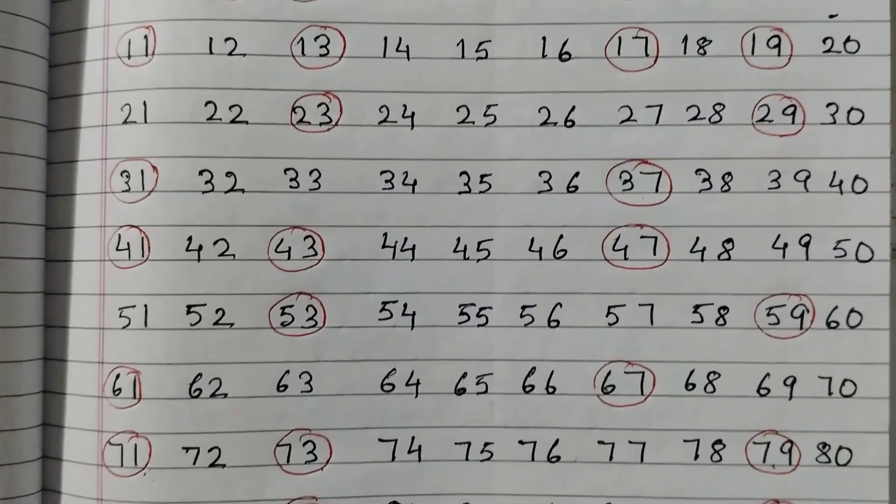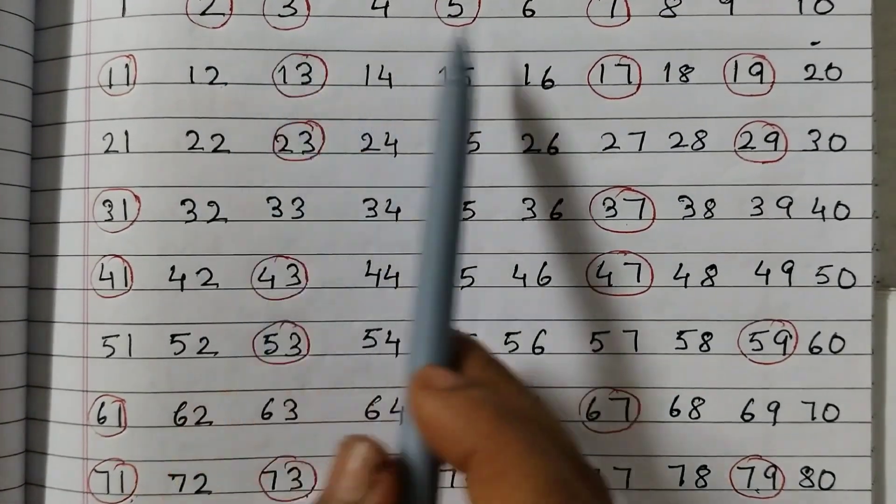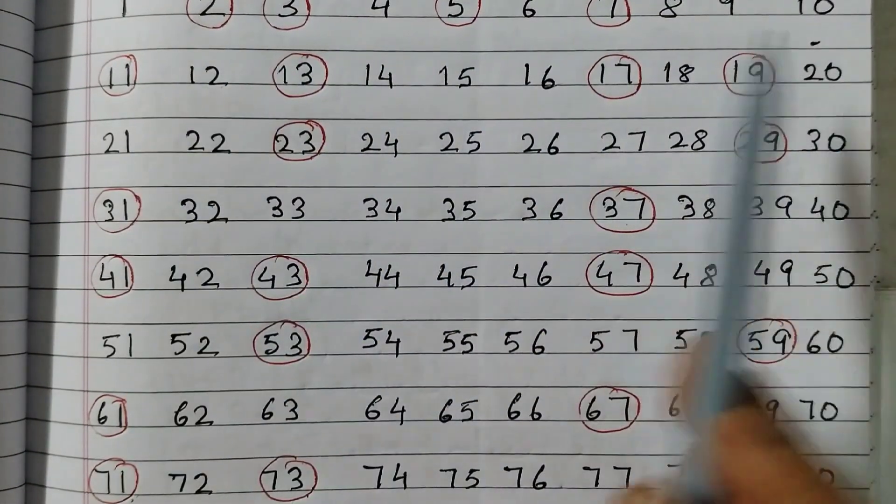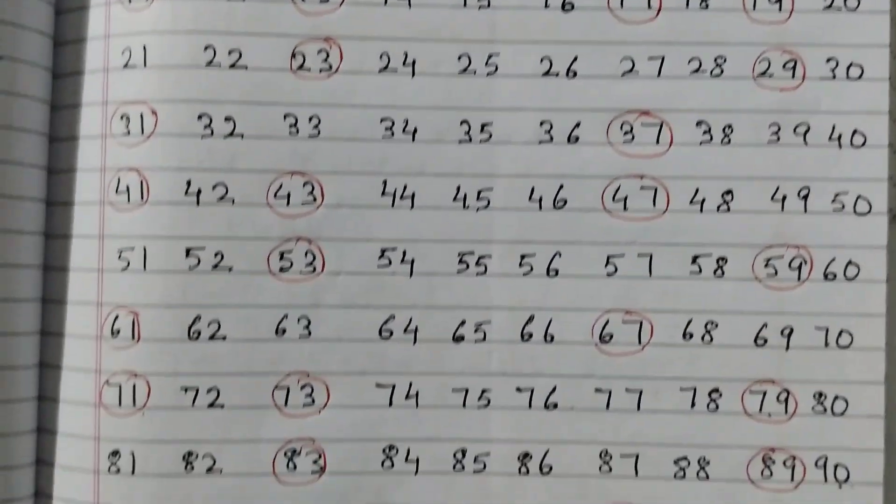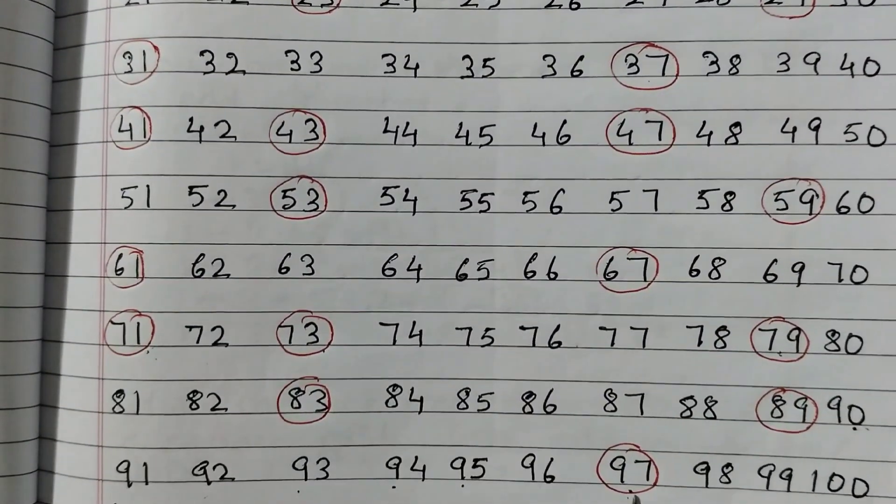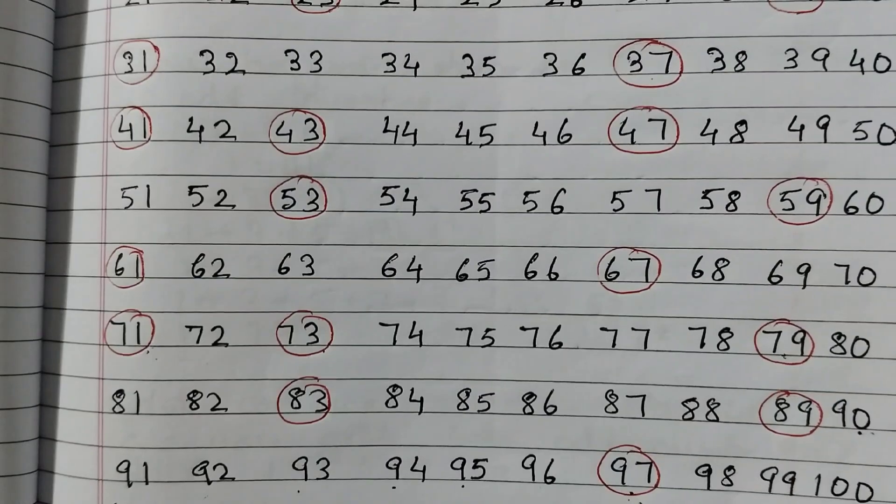So the first 2 rows each have 4 prime numbers, from 1 to 10 and 11 to 20. And the last row has just 1 prime number which is 97.